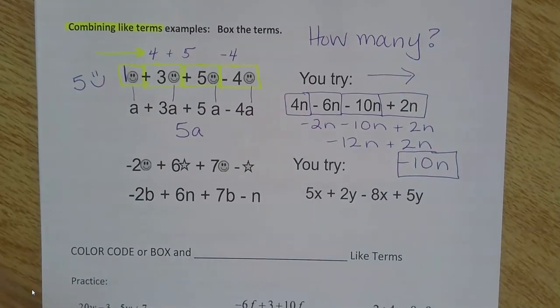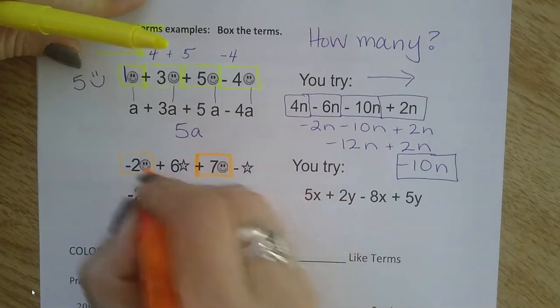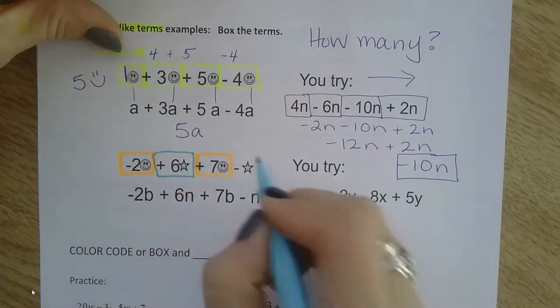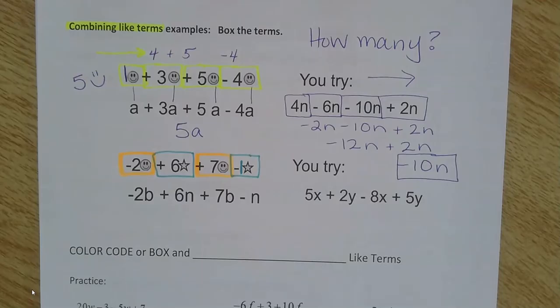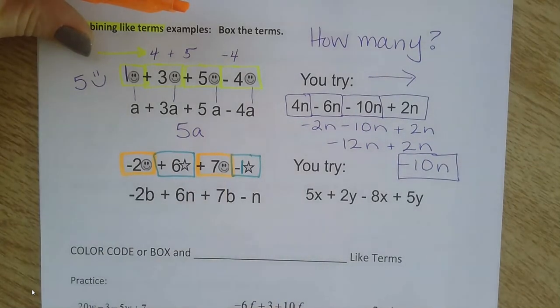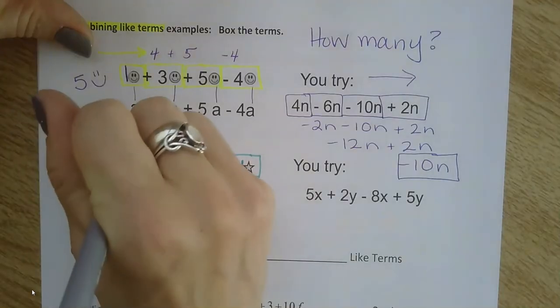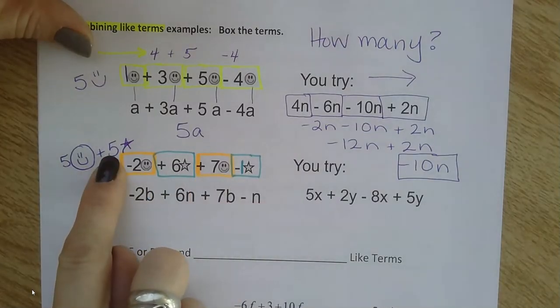Let's do one more. Now I'm actually going to color code. If you want to color code with me, you're welcome to. I see that I have smiley faces, I'm going to do those in orange. There's all my smiley faces. And I have stars - 6 stars and negative 1. If I fill in that invisible negative 1 star, now I'm going to put the smiley faces together. Negative 2 and 7 make 5 smiley faces. If I combine the like terms here, I end up with 5 smiley faces and 5 stars.